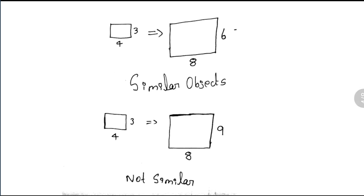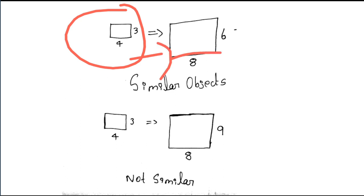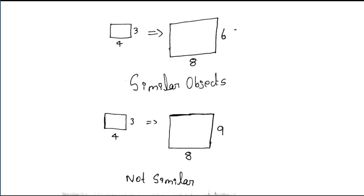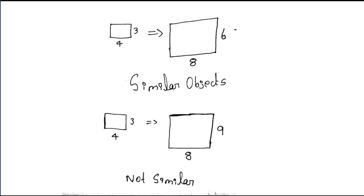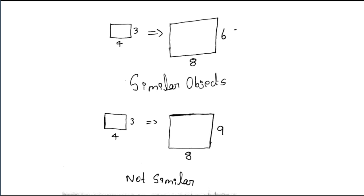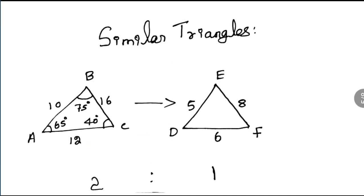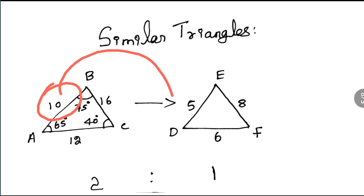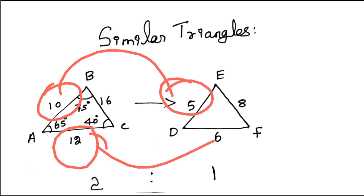So here is a similar object and not similar object. Here is an object with distance of 4 and 3. Here is an object — multiple of 2. So this is another object: 4, 12, 8.